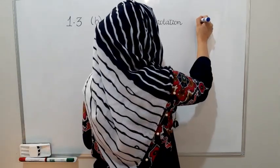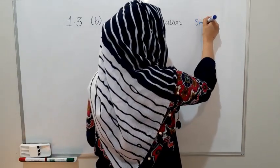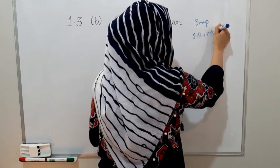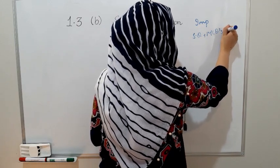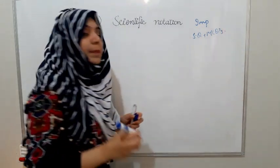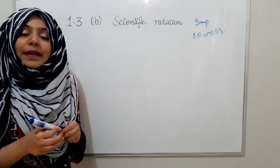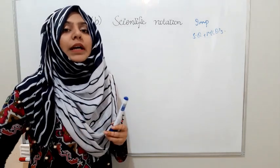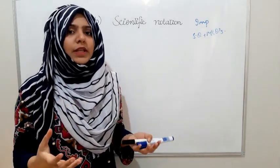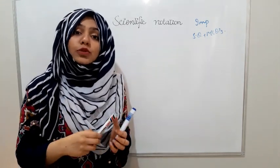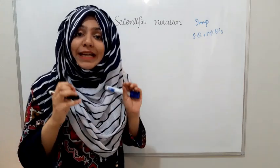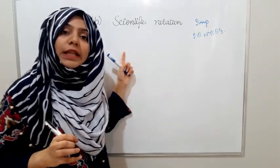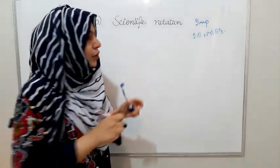This is an important short answer plus MCQs question. Now, scientific notation: if we are looking at any number or value, we should write it in standard form. This is called scientific notation.